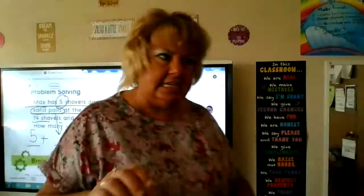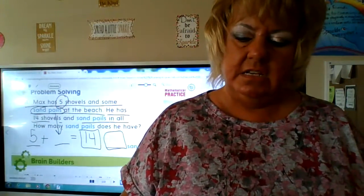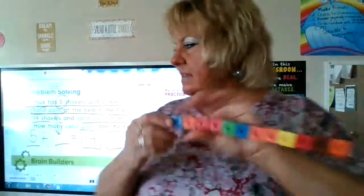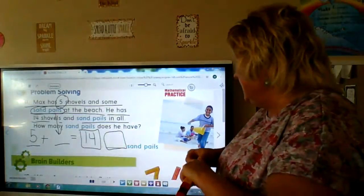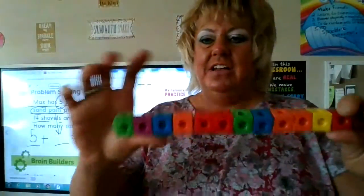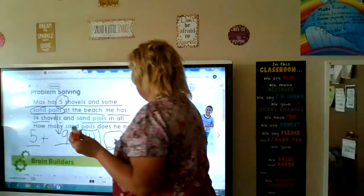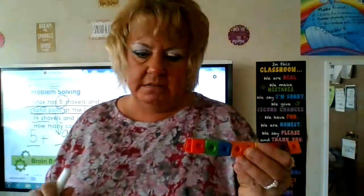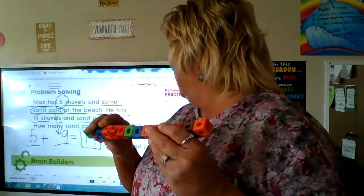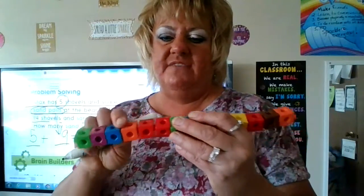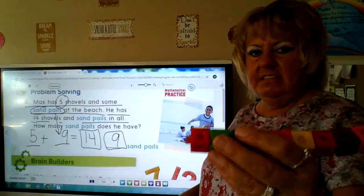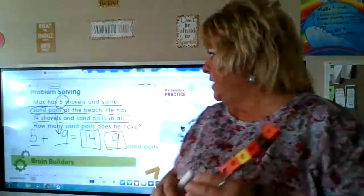We're going to start with 14. We have 14 and we're going to take away five: 1, 2, 3, 4, 5. So the parts of 14 are five and — 1, 2, 3, 4, 5, 6, 7, 8, 9 — five and nine. How many sand pails does he have? Nine. We started with 14, took away five, and that gives us nine. Five plus nine equals 14.